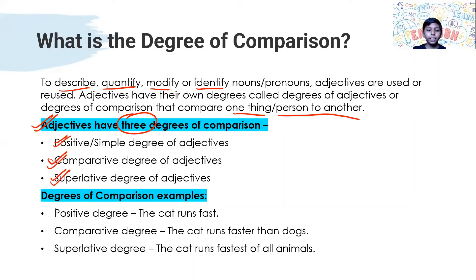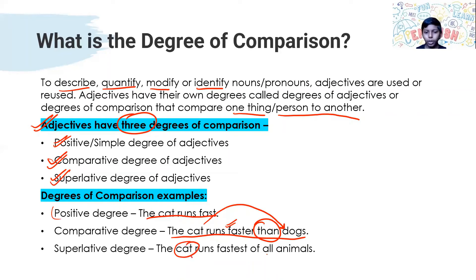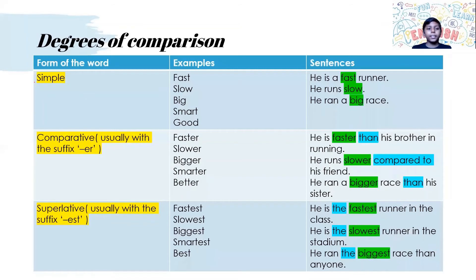Some examples: the simple or positive form — 'The cat runs fast.' Comparative — 'The cat runs faster than the dogs.' After the comparative form we use than or 'compared to': 'The cat runs faster compared to dogs.' Superlative — 'The cat runs fastest of all animals.' The cat is compared with the whole animal kingdom — all animals, not just one other. These are examples of the degrees used in sentences.